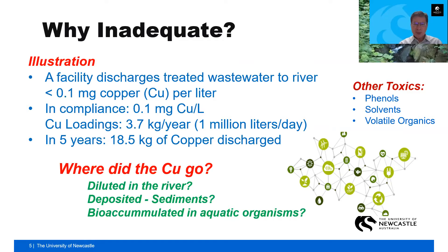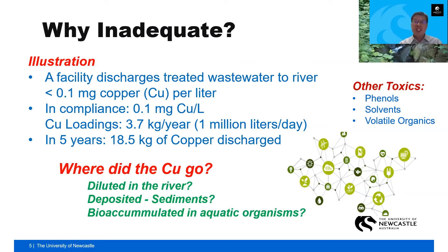You might have 1 million liters of wastewater discharged per day — not unusual for a large facility. Multiply that volume by the concentration and you get as much as 3.7 kilograms of copper per year going into the river. Over five years, that's close to 19 kilograms of copper discharged. You are in compliance, so it appears there's no problem — the copper is diluted in the river and can't even be detected in the water.